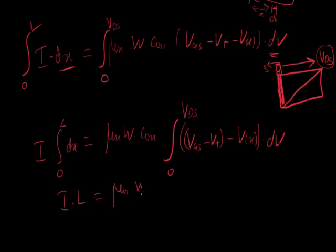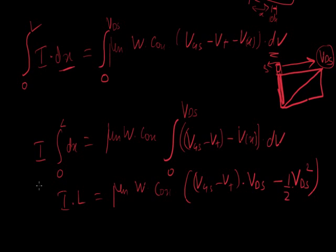Mu N, W, Cox. What do you got here? You got VGS minus VT times VDS. Minus VDS squared, squared times half. That's your basic integration.